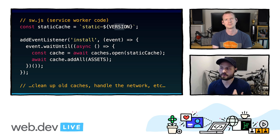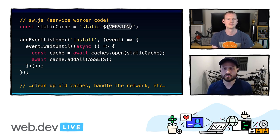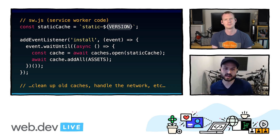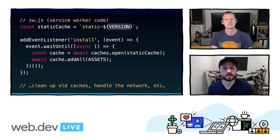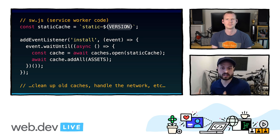We also need a version for the cache. When we're installing a new version of the app, we want to use a new cache so we don't potentially disrupt any current version of the application that's in use — maybe in another tab. Because of that, we need the version to be unique for each given set of assets. And if we don't change the assets, the version number should stay the same. But if we update the HTML, the version number needs to change.